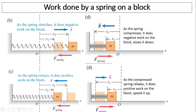Let's look at work done by the spring on a block. When the spring stretches, the spring does negative work on the block; as a result, the block's energy decreases and it comes to a stop. Similarly, as the spring compresses, the work done by the spring is also negative because force and displacement on the spring are opposite, so the block slows down. As the spring returns to its natural position, it does positive work and in both cases the block's energy increases.